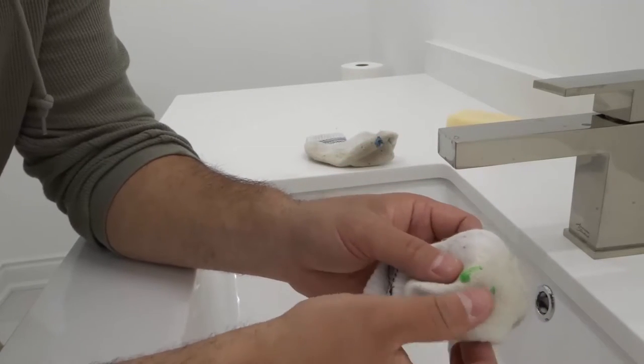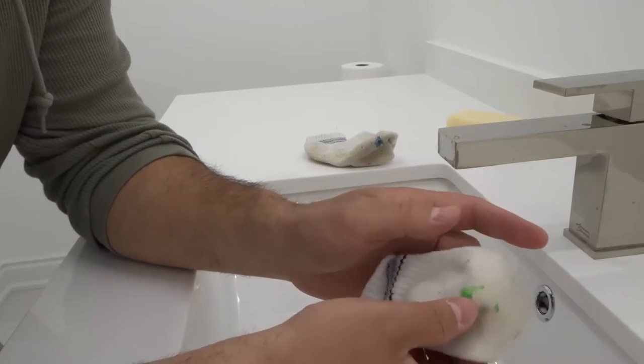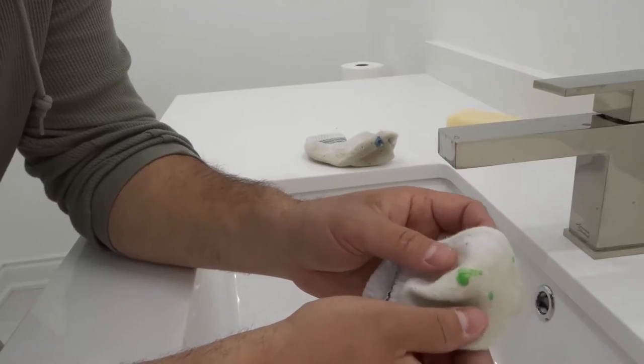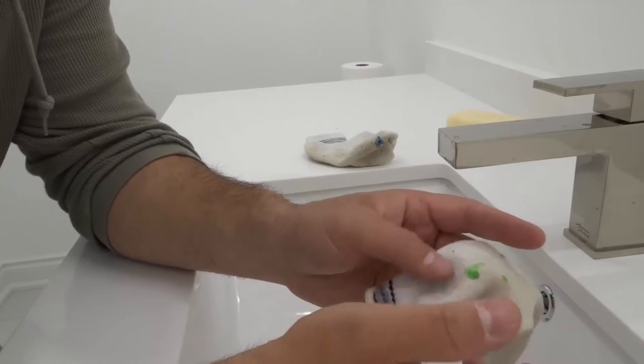Now play-doh is awesome, it's super fun and super easy to use, but it is prone to getting on kids' clothing and carpets and all that kind of stuff. So knowing how to remove it is a key factor.